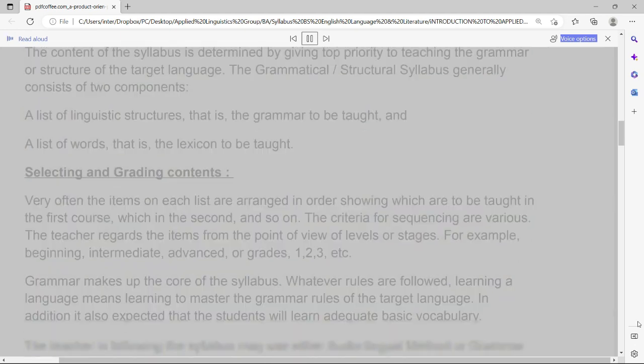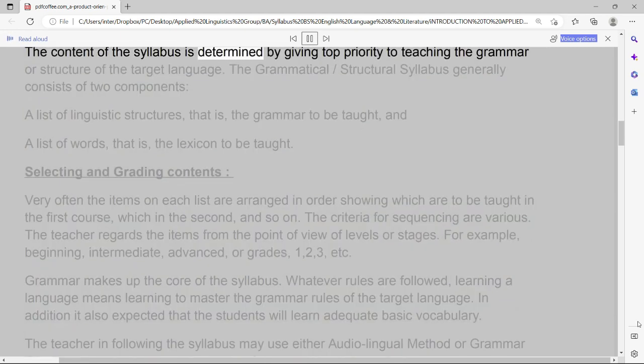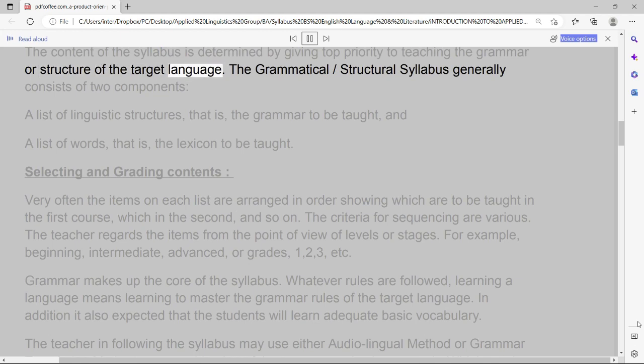The content of the syllabus is determined by giving top priority to teaching the grammar or structure of the target language. The grammatical or structural syllabus generally consists of two components: a list of linguistic structures, that is, the grammar to be taught, and a list of words, that is, the lexicon to be taught.